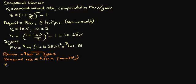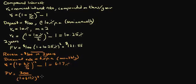So the effective annual interest rate equals 1 plus 6% divided by 12, all this to the power 12 minus 1, which equals 6.17%. So the present value, or PV for short, equals 300 divided by 1 plus 6.17% to the power 3, which equals $250.69.